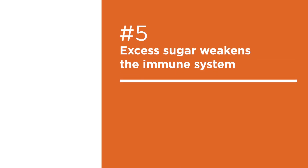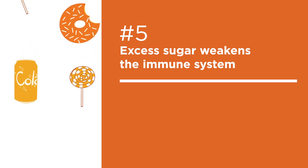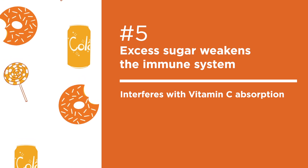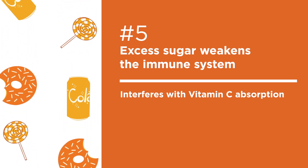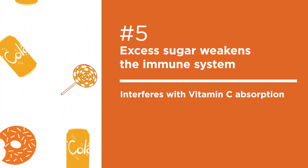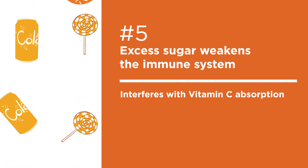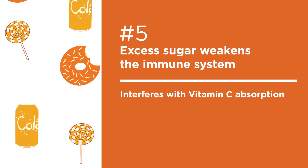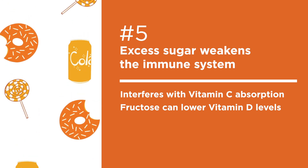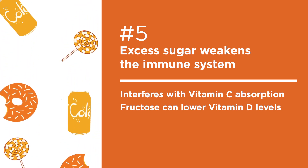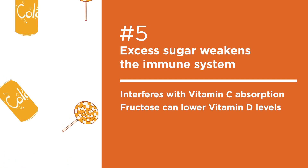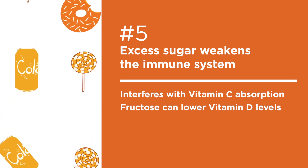Number five: excess sugar. A single system handles both sugar and vitamin C absorption. Excess sugar monopolizes the proteins that transport glucose and vitamin C for absorption in the cells, leaving vital immune system nutrient vitamin C unabsorbed and excreted from your body. Fructose, a sugar found naturally in fruits, can lower vitamin D levels when consumed in the excessive amounts added to processed foods and sodas.